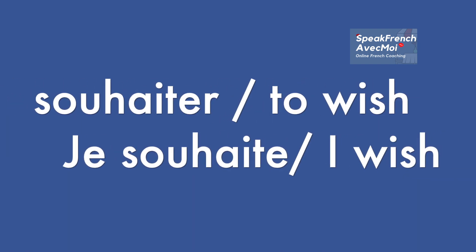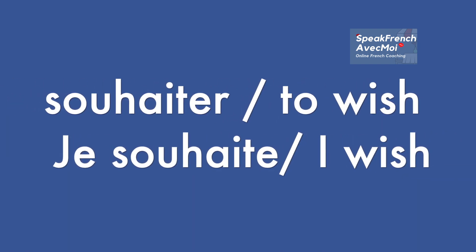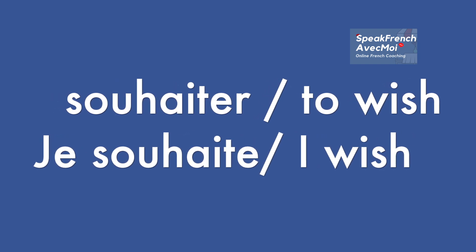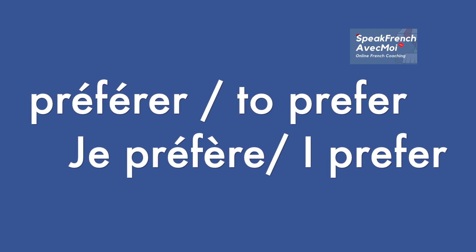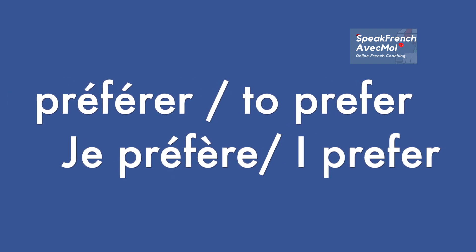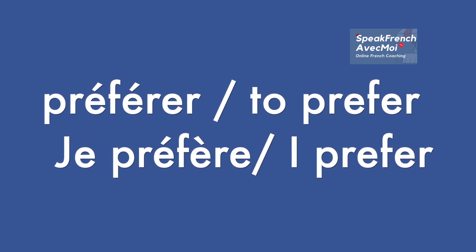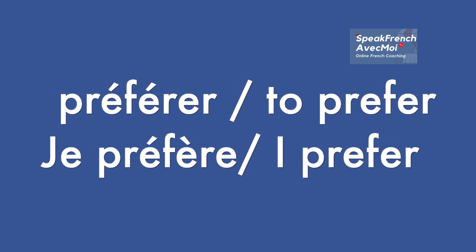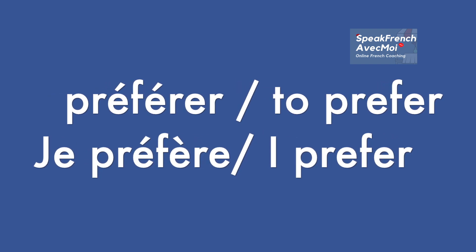Souhaiter. Souhaiter means to wish. Je souhaite — I wish. Préférer. To prefer — because you can guess. Je préfère, je préfère. We have two different accents here. Je préfère — so lips are stretched, préfer, R. You want your mouth to be open. Je préfère.